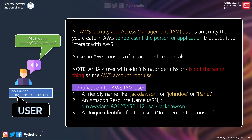How do we identify an AWS IAM user? It could be a friendly name like Jack Dawson or John Doe, it could be an Amazon Resource Name (ARN) such as arn:aws:iam::account-id:user/jack-dawson, or it could be a unique identifier for the user — this ID is only returned when you use the API or AWS CLI to create the user and is not visible in the console.